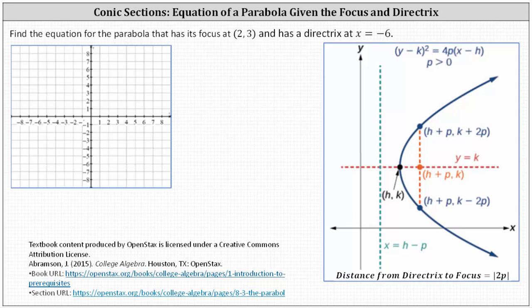We're asked to find the equation for the parabola that has its focus at two comma three and has a directrix at x equals negative six. Let's go ahead and plot the focus and sketch the directrix at x equals negative six. Because the directrix is a vertical line and the focus is on the right, we should be able to recognize the parabola will open to the right as pictured in our notes.